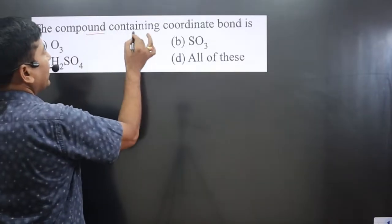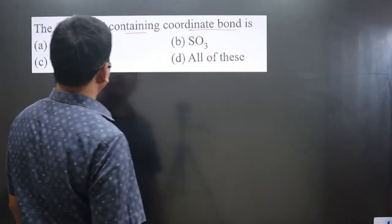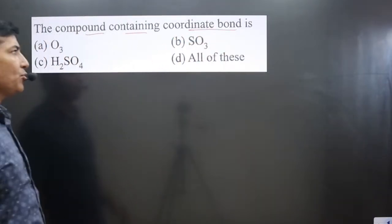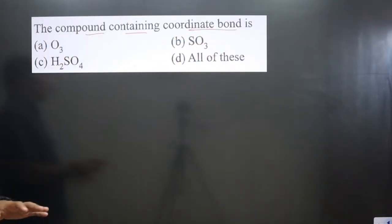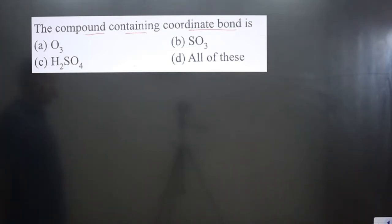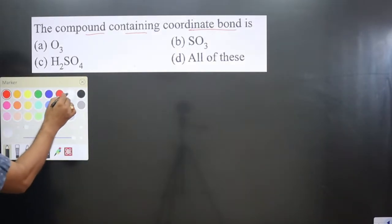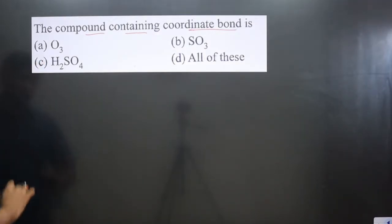The question asks which compound contains a coordinate bond. From the given compounds, we have to identify which one has a coordinate bond. We can draw the structures and then identify the type of bond present.